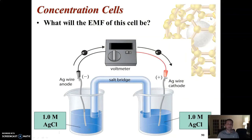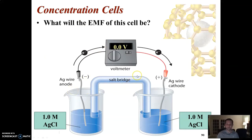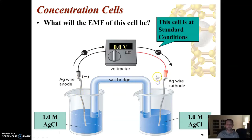If we take a look at the first example, both of my half cells are exactly the same — one molar for both, and they're both silver chloride solutions with a silver wire. So if I asked you what the EMF, or the voltage, of that cell would be — hopefully you guessed zero, because why would there be any electron movement? You have the same concentrations and the same metal. If you look up the reduction potential of silver for both the anode and cathode, you'd subtract the two values and get zero.